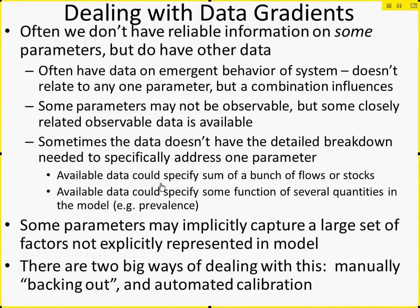Frequently, however, we don't have reliable information on a subset of the parameters. At the same time, we often will have a lot of data we haven't used in model parameterization — data that doesn't directly speak to one particular parameter. Instead, we'll often have data on the emergent behavior of a system. It doesn't relate to one particular parameter, but it's an aspect of overall system behavior. And in calibration, we're going to seek to leverage that data.